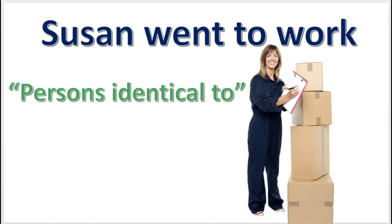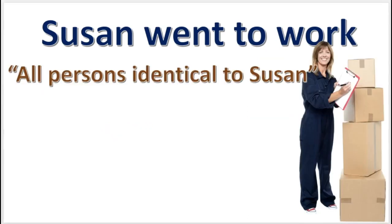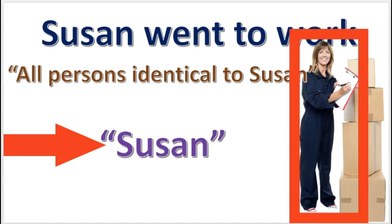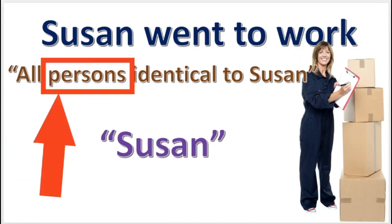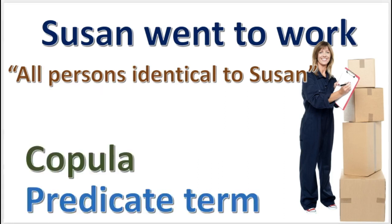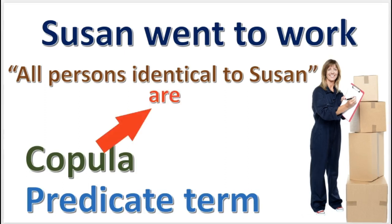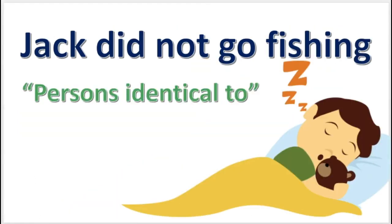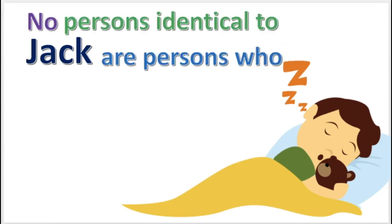For the parameter, we will use 'persons identical to' and combine it with the quantifier 'all.' The expression 'persons identical to Susan' is just another way of saying Susan — there's really only one person who's identical to Susan, and that person is Susan herself. This parameter allows us to enter the plural noun 'persons' into the subject. Now we can fix the copula and predicate term by entering 'are' for the copula and 'persons who' for the predicate. For a negative singular proposition, use the same parameter combined with the quantifier 'no,' then fix the copula and predicate term.